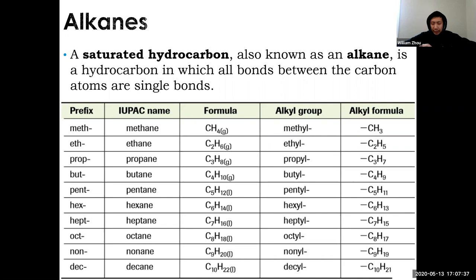If you have a saturated hydrocarbon, we call those alkanes — meaning all single bonds between the carbon atoms. In the table we have 10 basic alkanes, their prefixes, and their formulas. You must know these by heart; you won't have a table to refer to on a test.